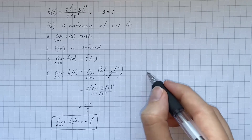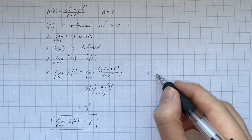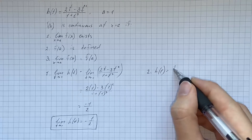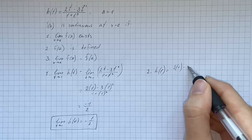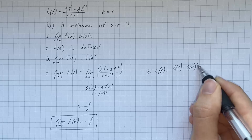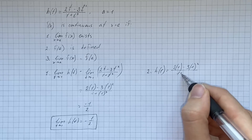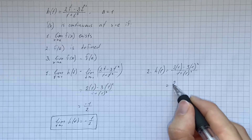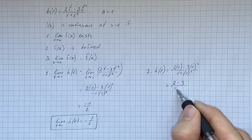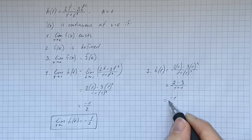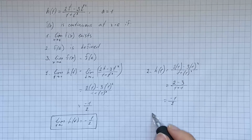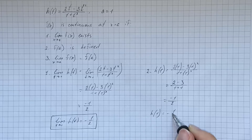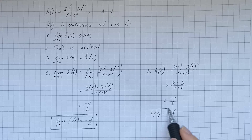Now we check the second condition. We find h evaluated at one, which is (2 times 1 minus 3 times 1 squared) over (1 plus 1 cubed). We get two minus three over one plus one, which is negative one over two. Therefore, h evaluated at one equals negative one-half, so h is defined at t equals one.